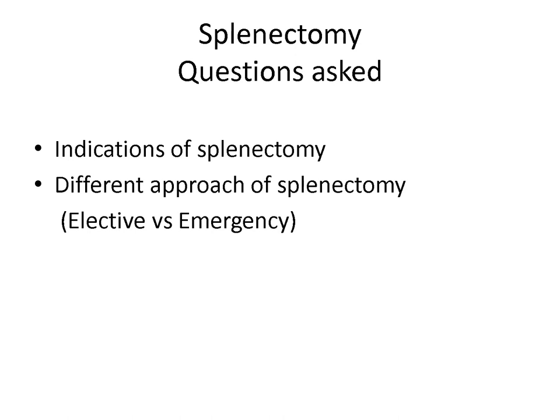As a surgeon, you should know the different approaches of splenectomy. You may have to do a splenectomy as an elective procedure or an emergency in the setting of trauma. Whenever you are doing an elective splenectomy, you always take control of the splenic artery first, then release the ligaments, and then approach the hilum. But in cases of emergency with a shattered spleen, you may have to tackle the hilum directly. You can be asked about the different approaches — open and laparoscopic — of splenectomy.